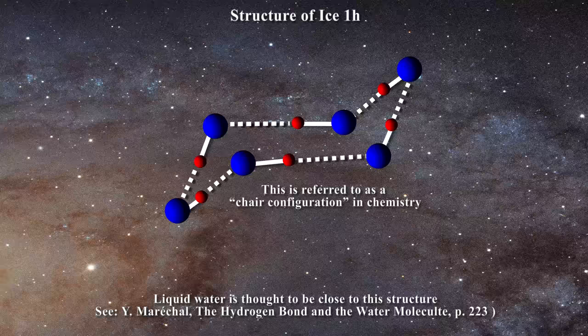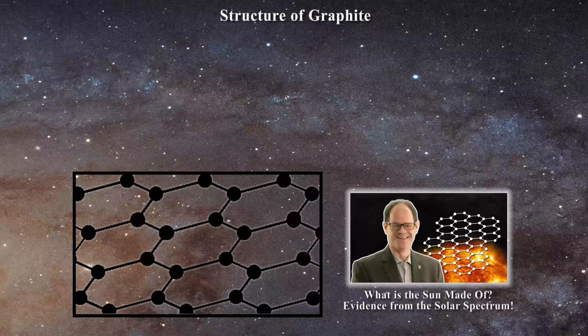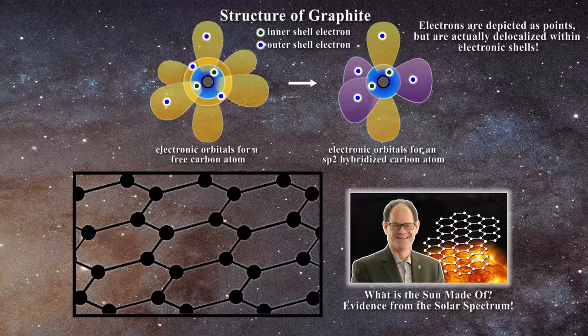Well first we have to look at the structure of graphite and consider the hybridization of each carbon atom. You recall that in this video I demonstrated that the carbon atoms in graphite are sp2 hybridized. Each carbon atom has four outer shell electrons.